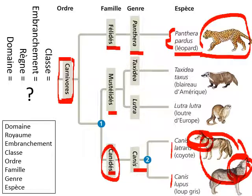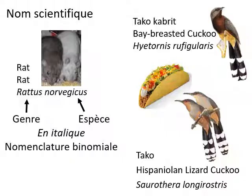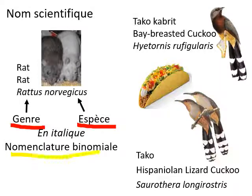Notice the use of the Latin name. For example, Taxidea taxus. The Latin name is also called the scientific name. It consists of two parts: the genus and the species name. Because of these two parts, this is also called binomial nomenclature — 'bi' means two, 'nomen' refers to name.